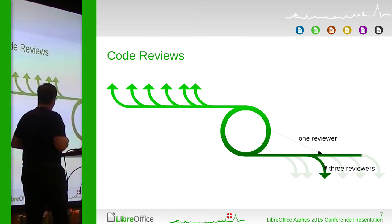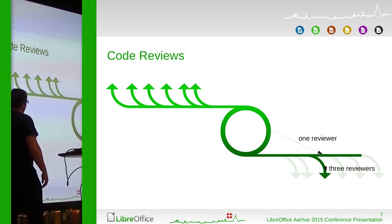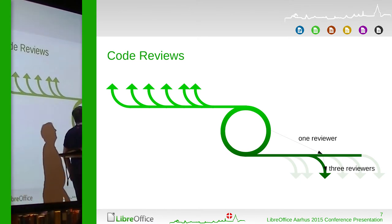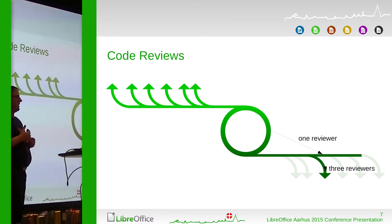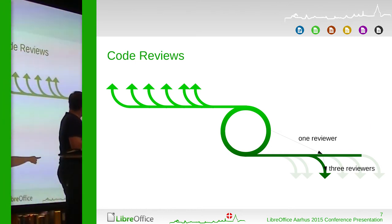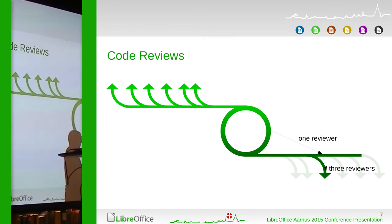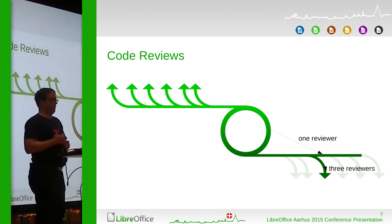I talked about these different branches — things are going on madly on master and then we cool things off on the release branch. Essentially you always commit to master with very few exceptions, and if something important needs to be in a bug fix release you ask for it to be backported. For that you need one reviewer. If you want it in the release that's three weeks away you need three reviewers to review your code.